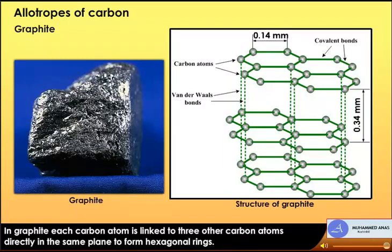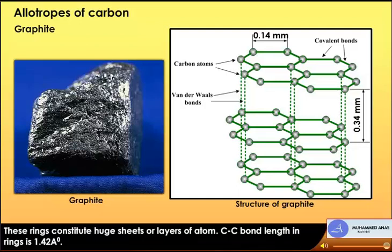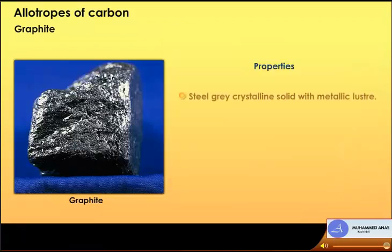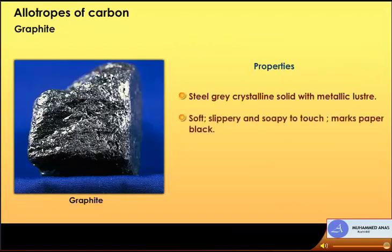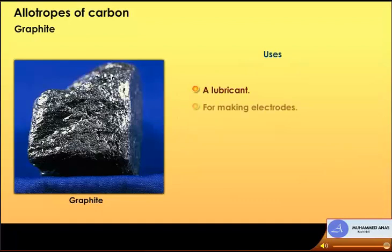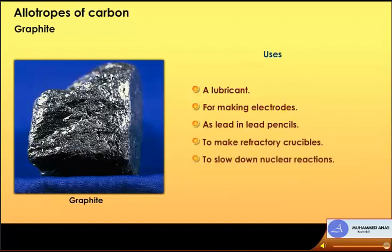Graphite: in graphite, each carbon atom is linked to three other carbon atoms in the same plane to form hexagonal rings, which constitute huge sheets or layers of atoms. Carbon-carbon bond length in the rings is 1.42 Angstrom. Properties: steel grey crystalline solid with metallic luster; soft, slippery and soapy to touch; marks paper black; good conductor of heat and electricity. Uses: as a lubricant, for making electrodes, as lead in lead pencils, to make refractory crucibles, and to slow down nuclear reactions.